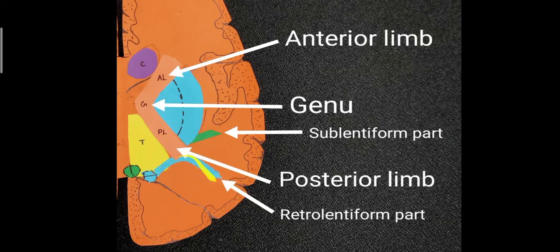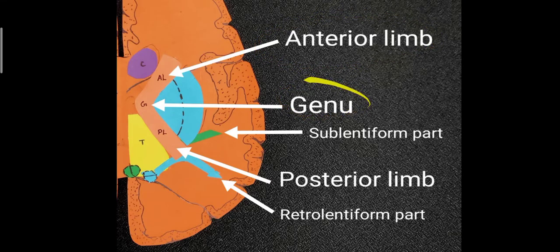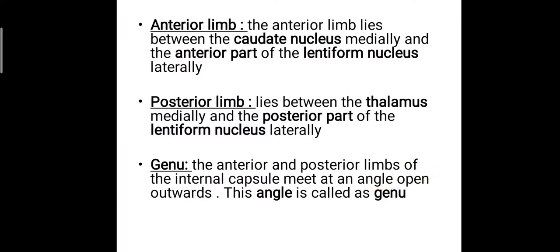There are five parts: the anterior limb, the genu, the posterior limb, the sublentiform part, and the retrolentiform part. The anterior limb lies between the caudate nucleus medially and the anterior part of the lentiform nucleus laterally. The posterior limb lies between the thalamus medially and the posterior part of the lentiform nucleus laterally.